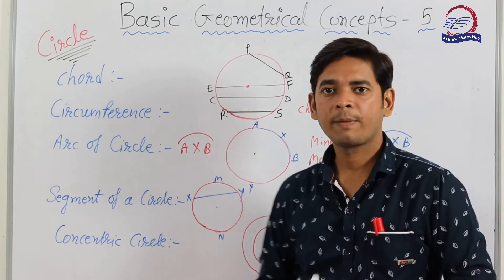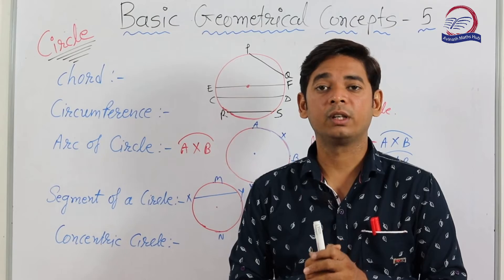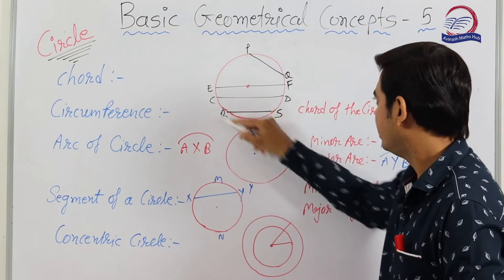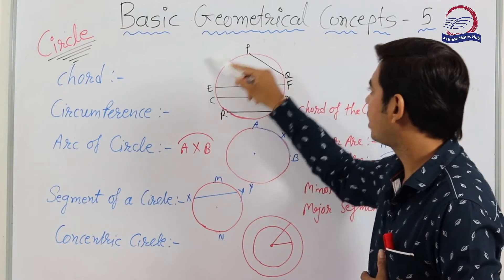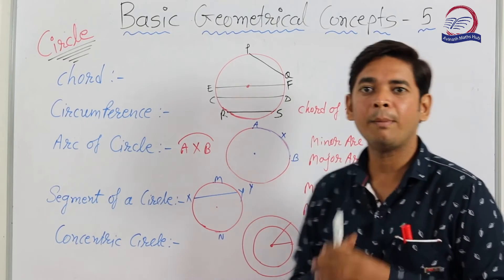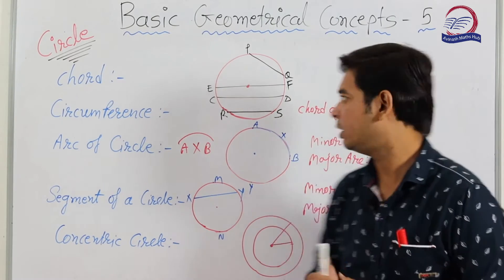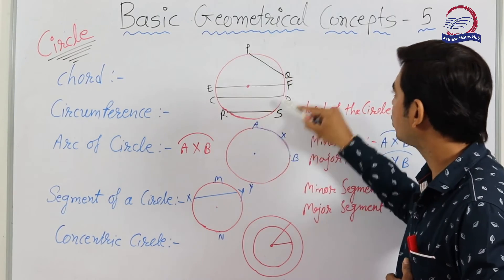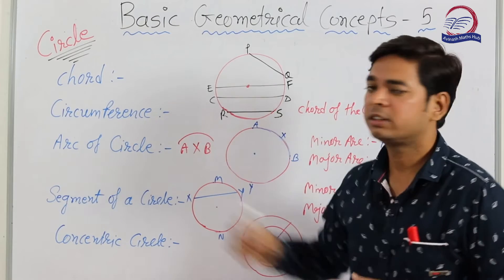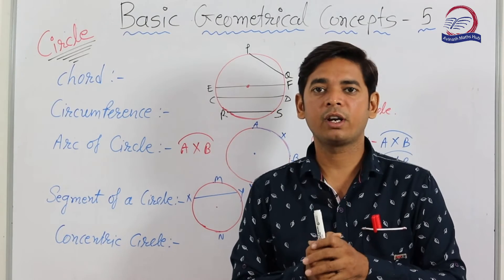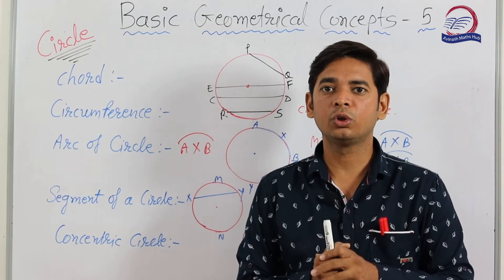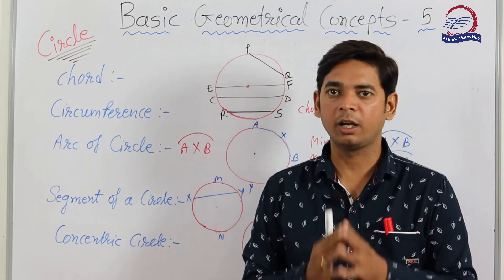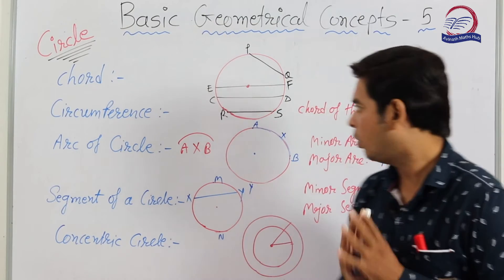Next: circumference. What is circumference? Circumference is the length of the curved line which forms the boundary of the circle. It is also called the perimeter of the circle.